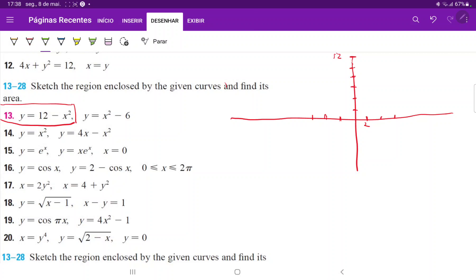So the first curve, the vertex is at 12, right? And then we just need to draw it. So we need to find the roots.